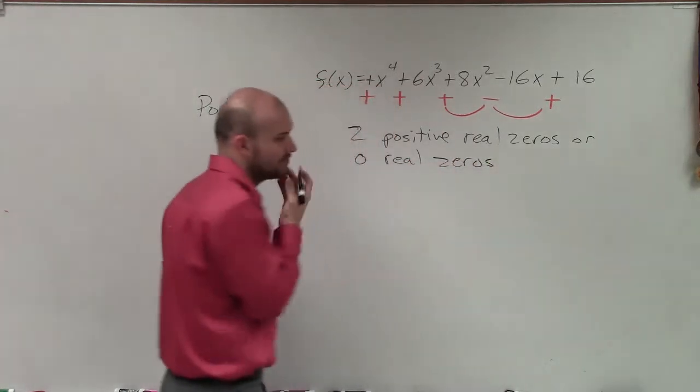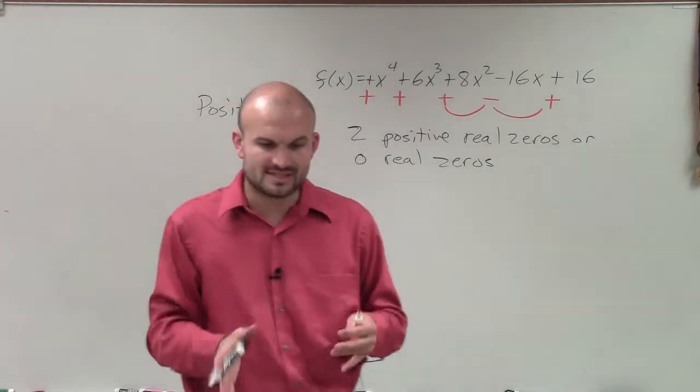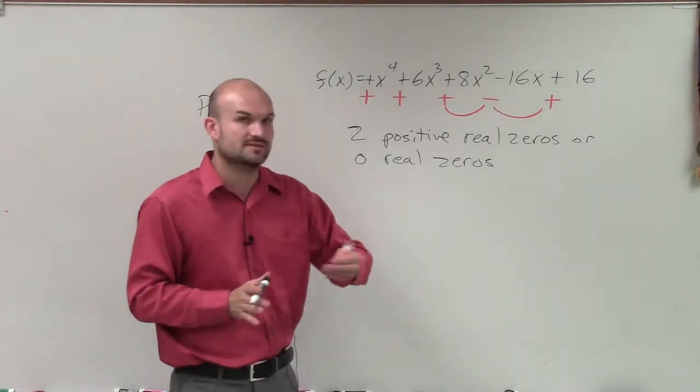The reason why we go from two to zero is because we always take the number of possible real zeros and then subtract an even number.